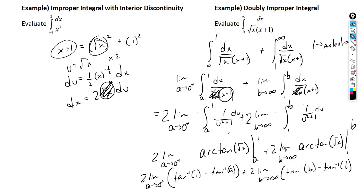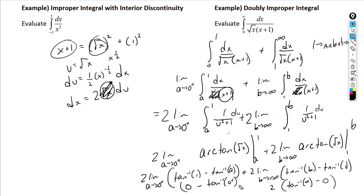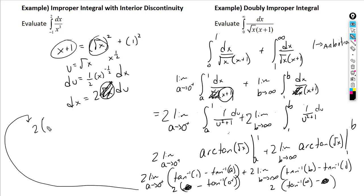arctan(1) = π/4, and arctan(√0⁺) = arctan(0) = 0, so the first piece gives 2(π/4 − 0) = π/2. arctan(∞) = π/2 and arctan(1) = π/4, so the second piece gives 2(π/2 − π/4) = π/2. Adding both pieces: π/2 + π/2 = π.